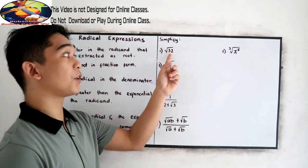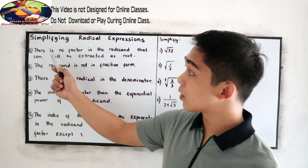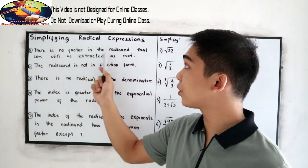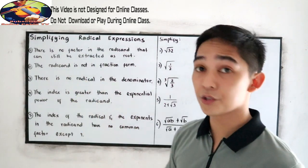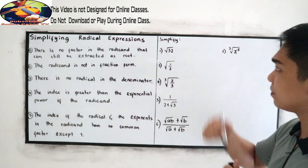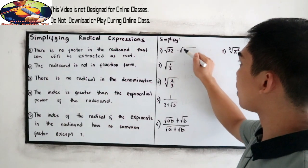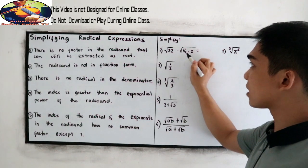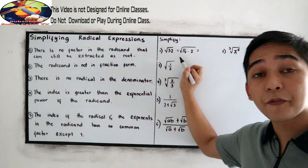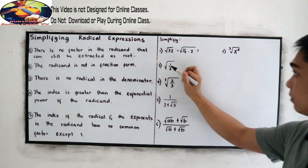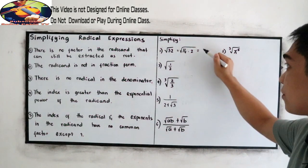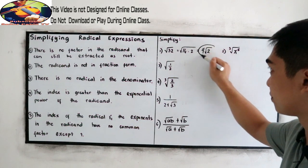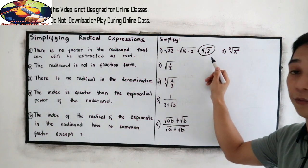Simplify: square root of 32. Following characteristic number one, there is no factor in the radicand that can still be extracted as a root. Factors of 32 are 16 times 2. 16 times 2 is 32. 16 is a perfect square number. Square root of 16 is 4. Then copy square root of 2. So, 4 square root of 2.